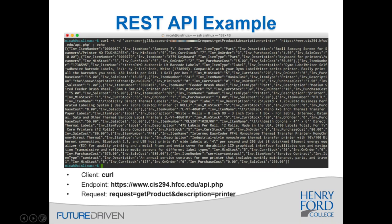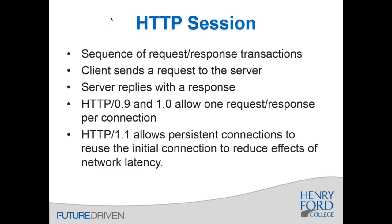The client I used for this is curl. The URL I hit is cis294.hfcc.edu/api.php, and built into my request — the '-d' is the data I sent — I've got a username, a password, a request of 'get product', and description equals 'printer.' This sent back all of the products that were printers in JSON format. From the API, I asked for printers and got them all back in JSON — that's the basic foundation of REST APIs and how RESTful applications work.